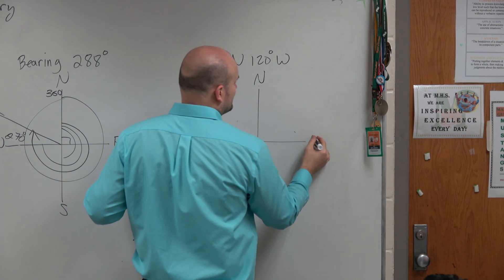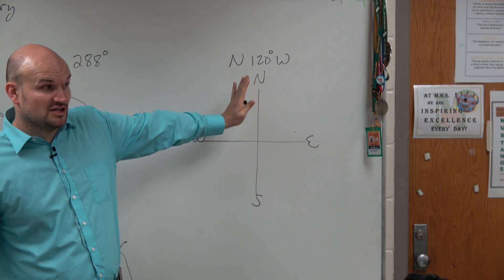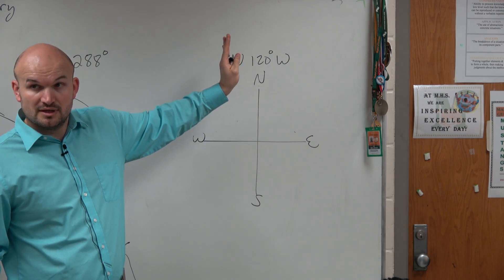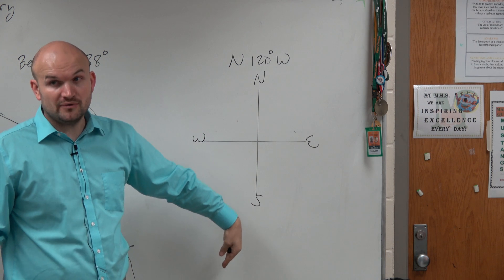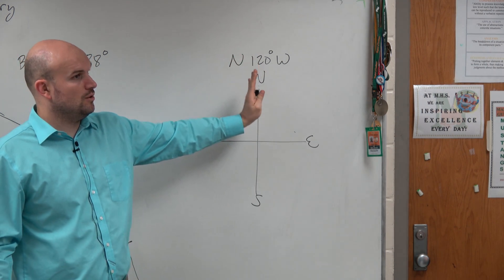So Ashlyn, I'll do my north, east, south, west. North 120 degrees tells me to start due north. If it said south, I would start due south. But it says start due north, and then do 120 degrees west.